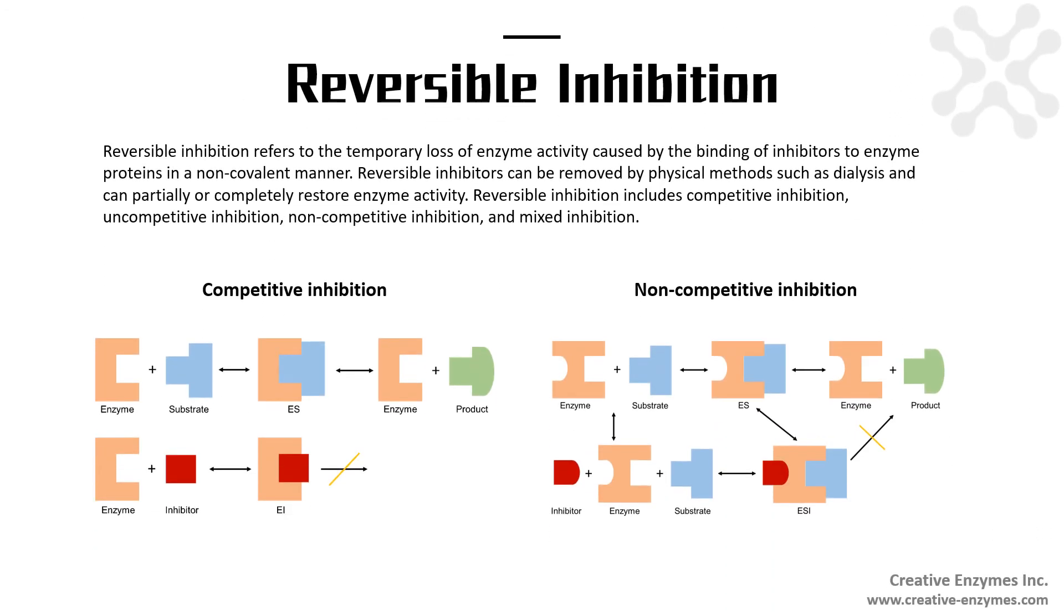Reversible inhibition refers to the temporary loss of enzyme activity caused by the binding of inhibitors to enzyme proteins in a non-covalent manner. Reversible inhibition includes competitive inhibition, uncompetitive inhibition, non-competitive inhibition, and mixed inhibition.